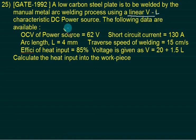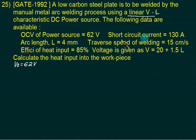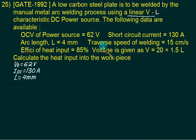For the V and L characteristic DC power source, the following data is used. What is V0? 62. What is the short circuit current? 130 amps. What is the arc length? 4 mm.